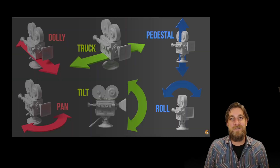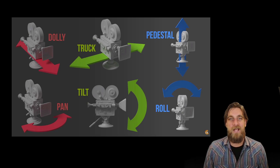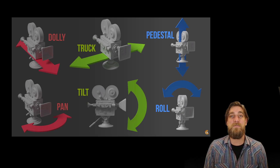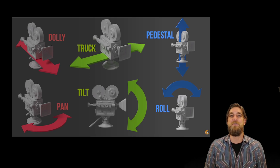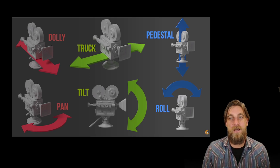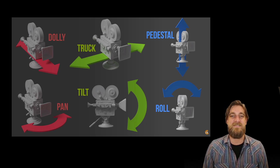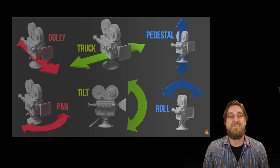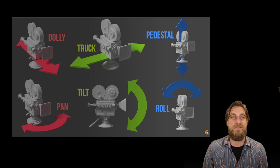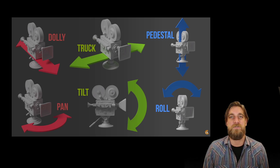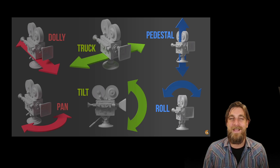Here are some of the foundational camera movements that you've probably already heard of and probably already been putting into practice. The two most common are pan and tilt. Pan and tilt are movements that the camera makes when it's still in a fixed position on a tripod. You turn the camera to show things to the left and to the right — that's panning.